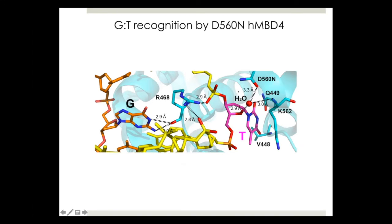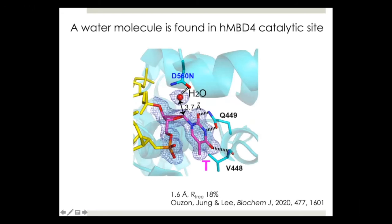In this structure we found a water molecule. This water molecule is nearby the C1-prime of substrate thymine and is also proximal to the catalytic carboxylate. This structure suggests that this water molecule may be activated by the catalytic carboxylate and attack the C1-prime position to cleave the carbon-nitrogen glycosyl bond of the substrate thymine.